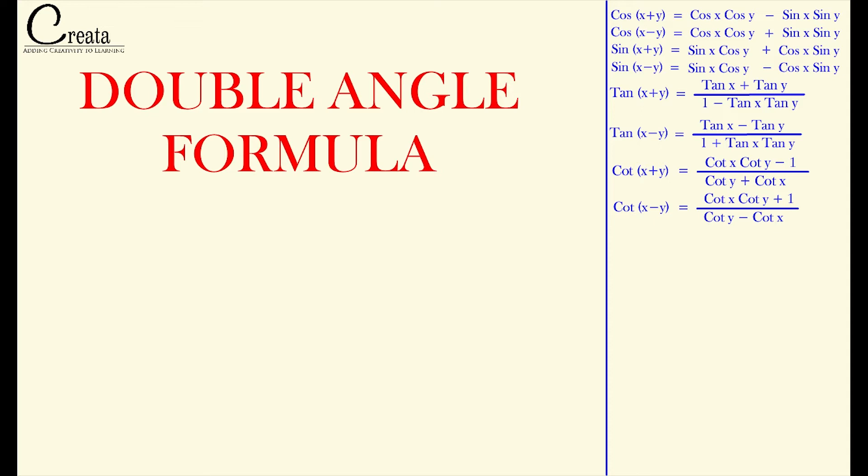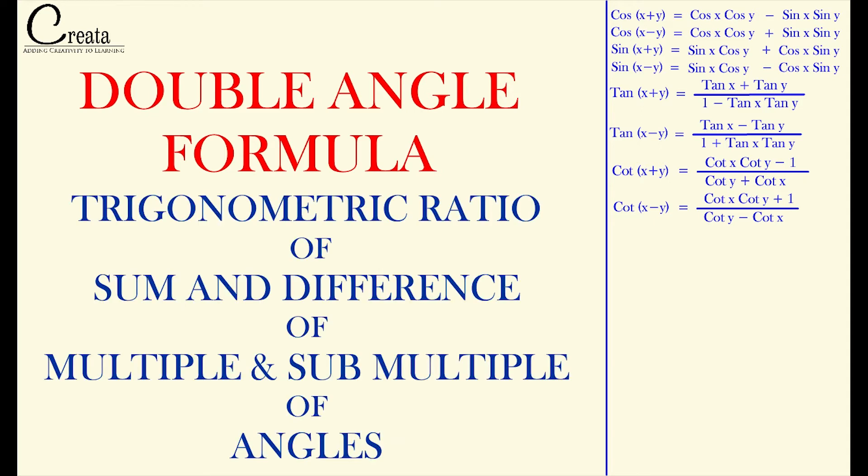The double angle formulas come under the trigonometric subsection: trigonometric ratios of sum and difference of multiple and submultiple of angles. And these are the basic trigonometric ratios, sum and difference formulas.